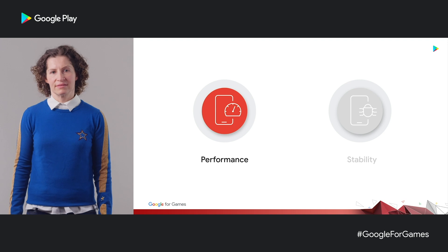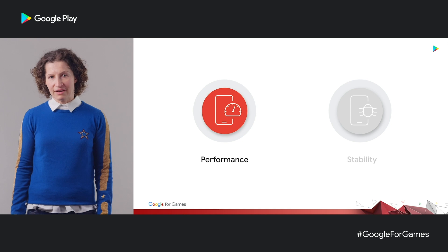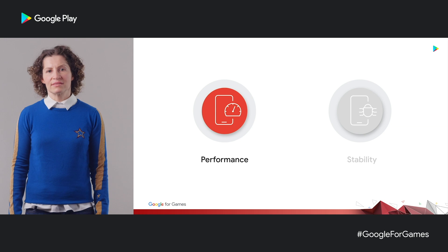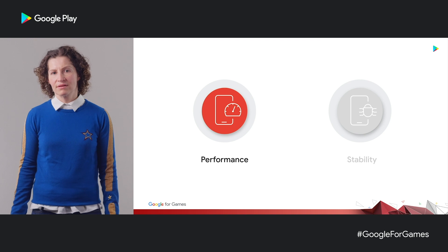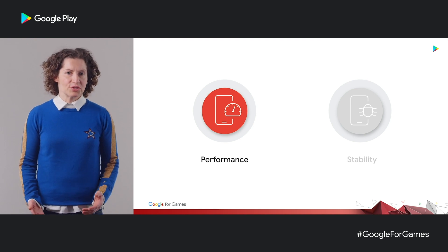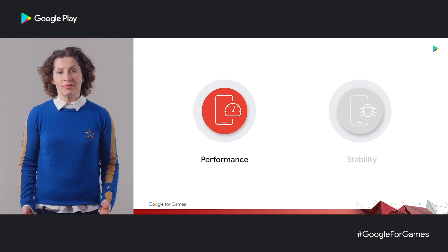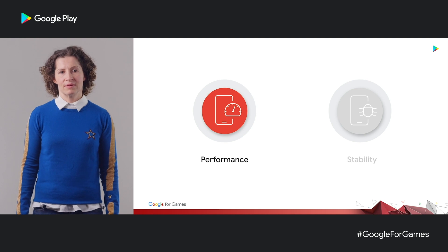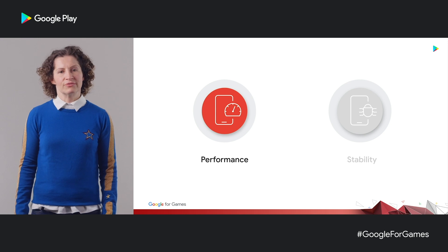Let's start with performance. An increasing number of the top games on Play and on mobile in general are graphically intensive. They make the most of the capabilities of the latest devices, and many appeal to users from a console or PC gaming background. For games like this, the visual world that you create is what uniquely distinguishes your game. You don't need me to tell you that this is a key part of what keeps your users playing longer, coming back, and talking about you. The challenge is balancing your game's fidelity with the need for good performance.